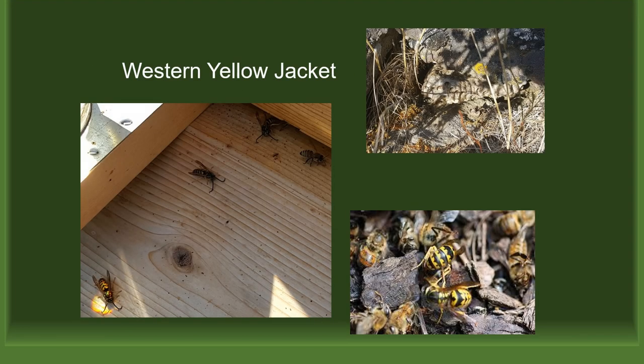Yellow jackets are wasps and are the other predators of the honeybee. They build paper nests in the ground that can be very large, defensive, and aggressive. The photo on the left shows a honeybee guard at the entrance with a dead yellow jacket at the hive entrance and others waiting to go in. The photo at the bottom right shows dead bees on the ground in front of the hive with yellow jackets feeding. Yellow jackets can be a natural recycling agent for dead bees that are hauled out of the hive.